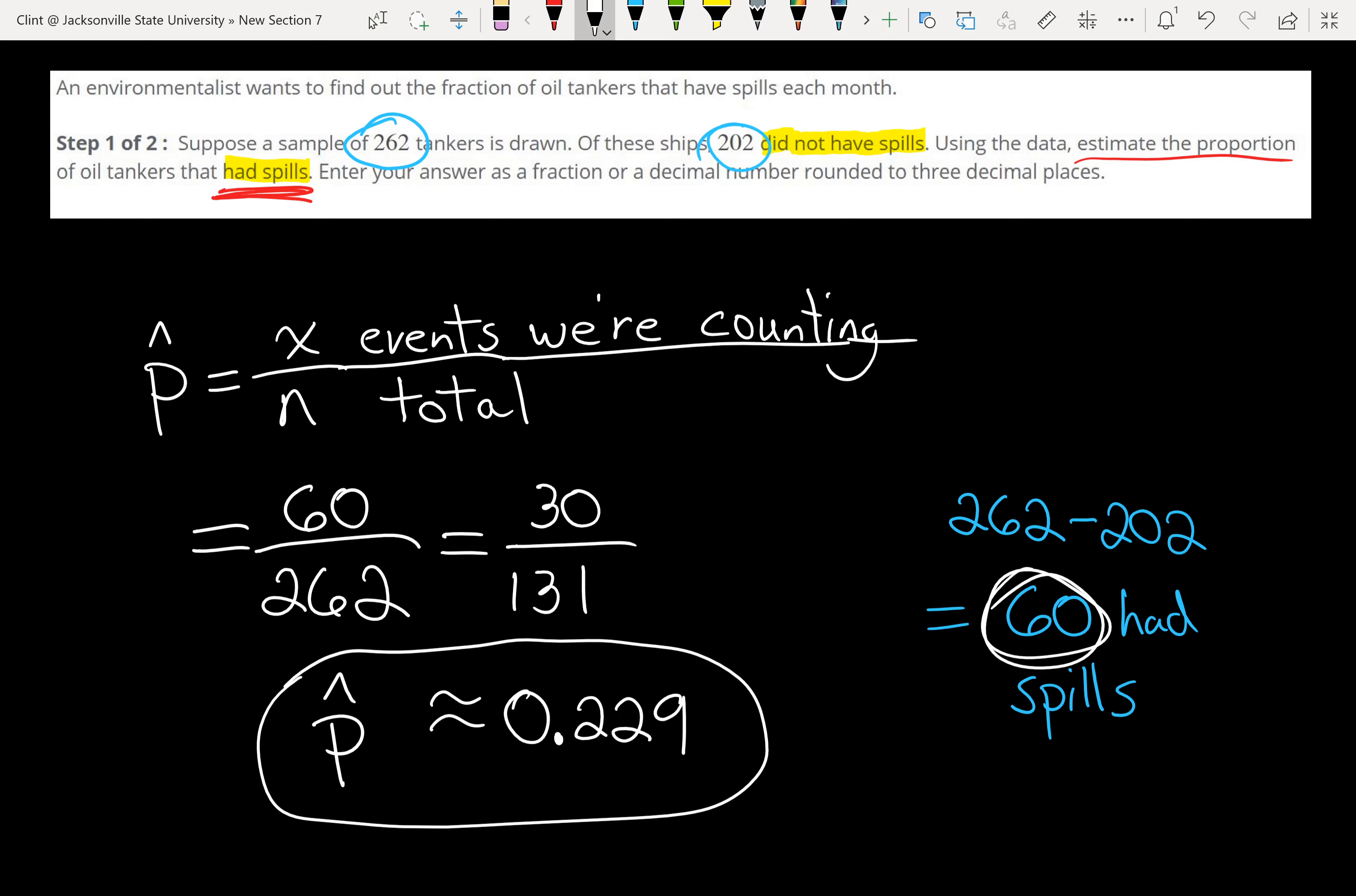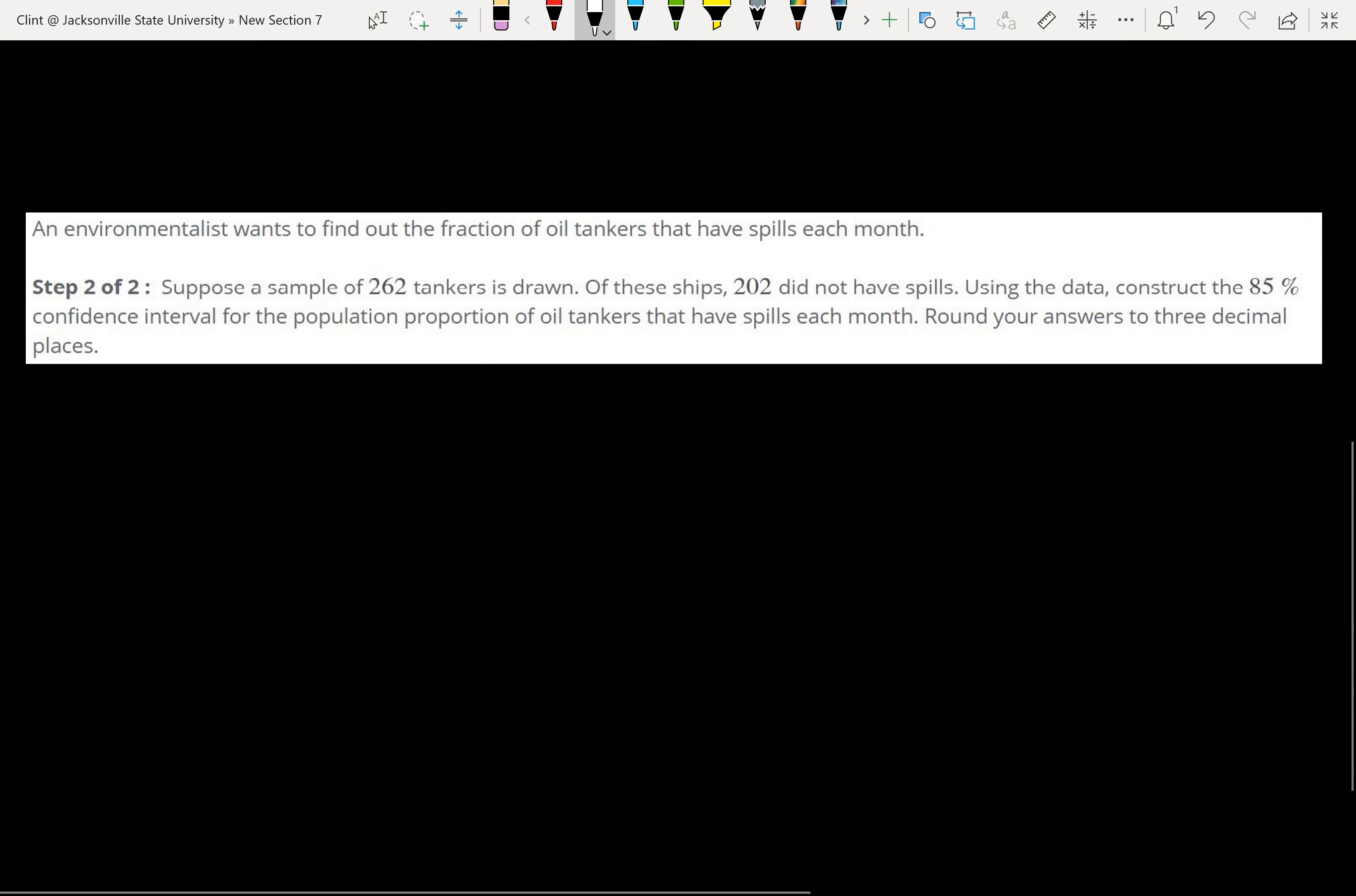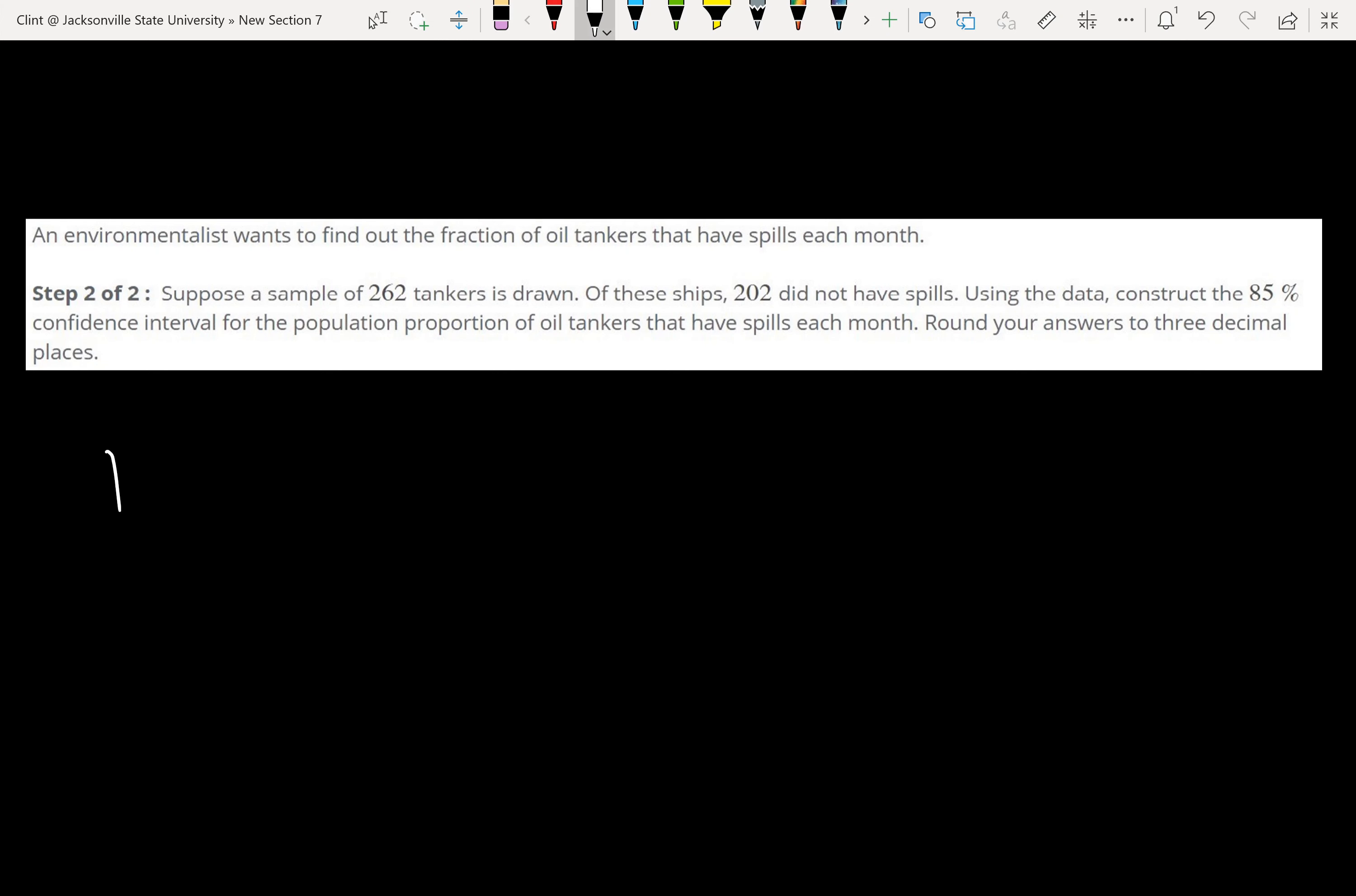Step two is going to give us the same information, but it's going to tell us to find a different number. So step two, I'm going to make note that p-hat is 0.229, that's from our last step.